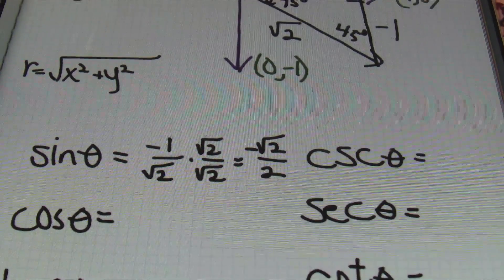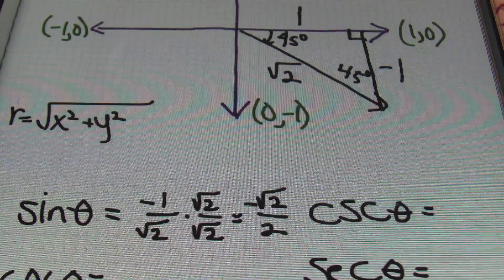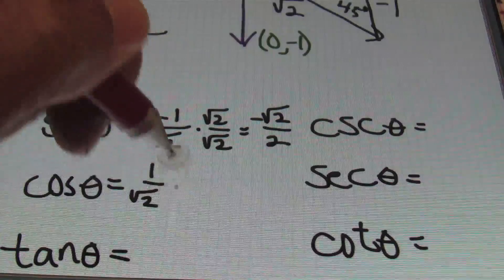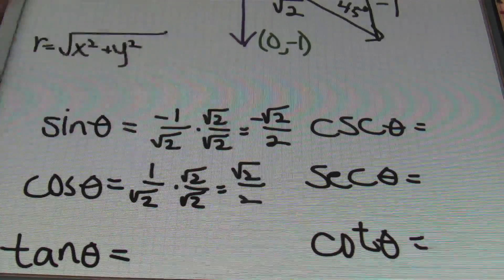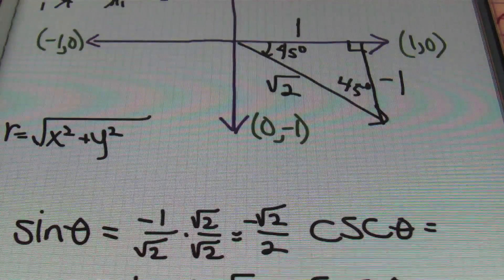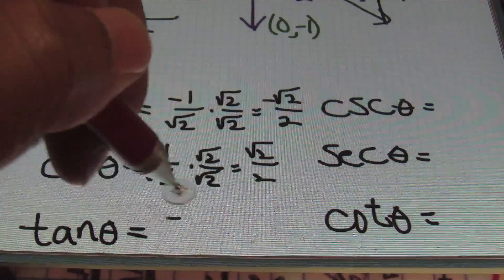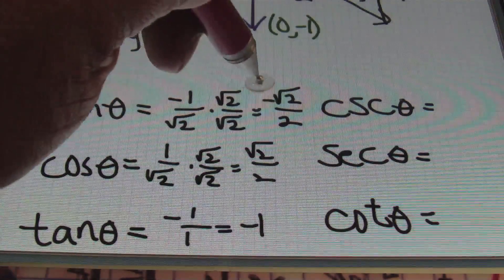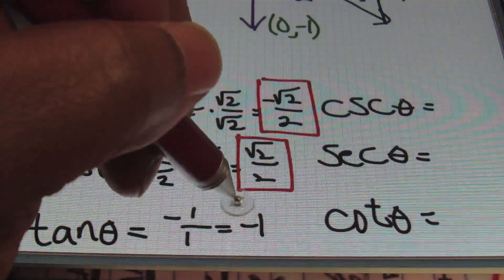Then for cosine theta, I'll end up with my x value over my r value. My x value is 1 over my r value, which is square root of 2. So I now have 1 over the square root of 2, and once again I'll need to rationalize this, giving me a result of square root of 2 over 2 for my cosine value. Then for my tan value, my tan value is always y over x. I know that my y value is negative 1 and my x value is positive 1, so I'll end up with negative 1 over 1, which simplifies to give me negative 1. Thus far: sine value is negative square root of 2 over 2, cosine value is square root of 2 over 2, and tan value is negative 1.